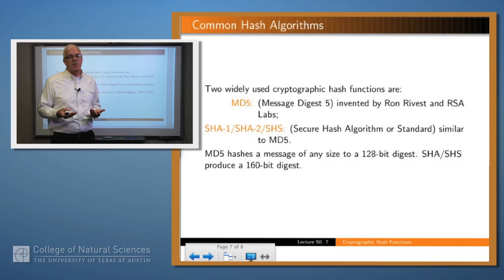There are a number of hash functions which are available commercially. For example, MD5, which is Message Digest 5, generates 128-bit hash. And there's a number of functions called the SHA functions, the secure hash algorithm, SHA1, SHA2, SHA256, SHS, and those generate 160-bit functions.